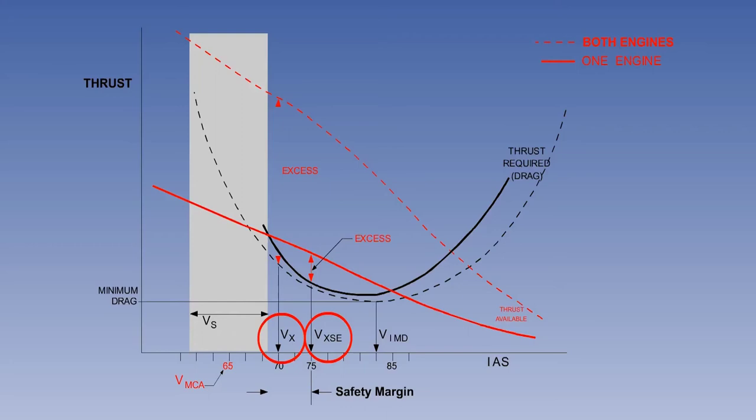The IAS for best angle of climb is VX for all engines operating, and on twin-engine aircraft, VXSE is best for single-engine climb angle.